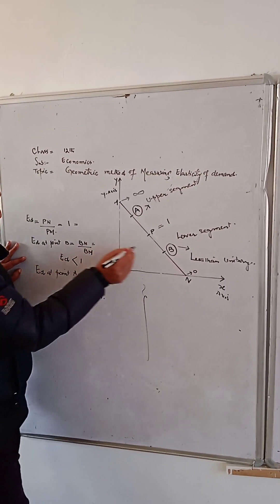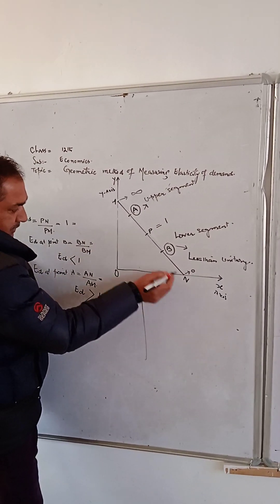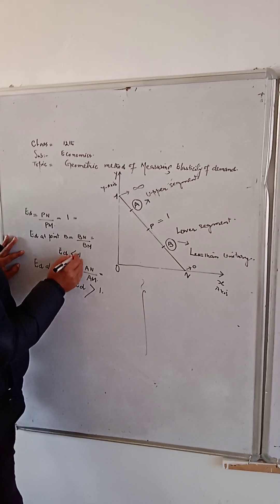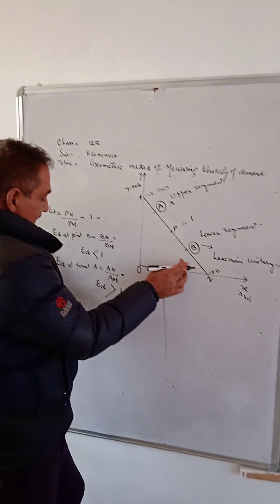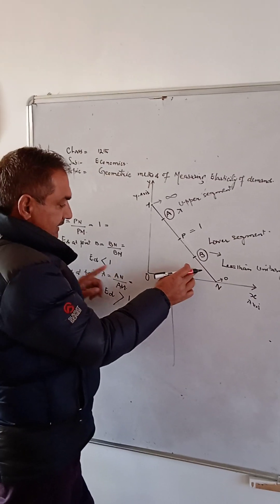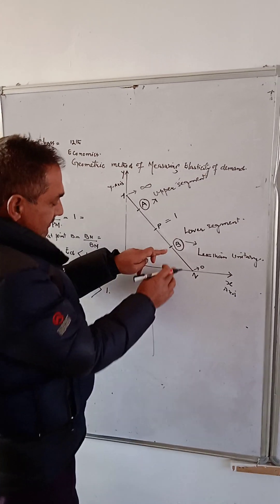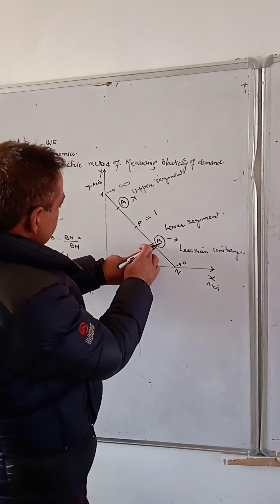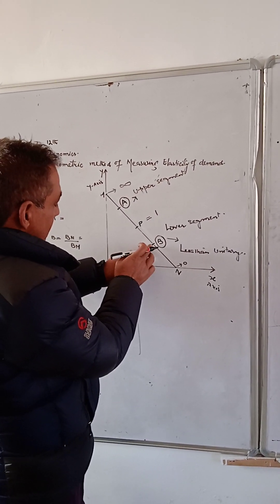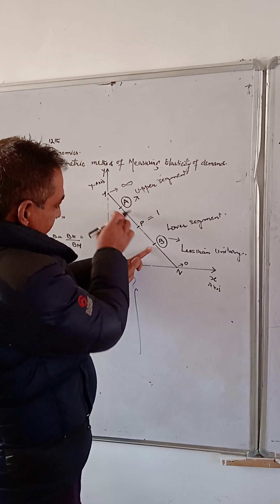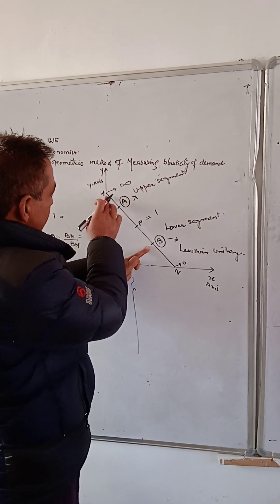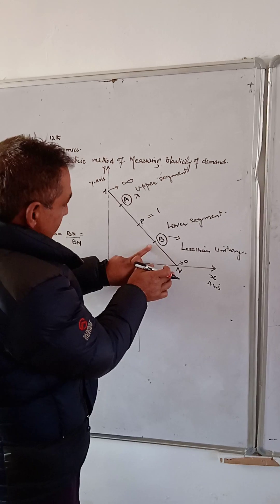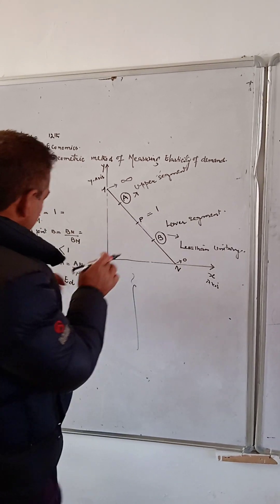From this, elasticity of demand at this point will be equal to less than 1. Why is it less than 1? Because this area is lesser than this area — B-N is less than B-M.